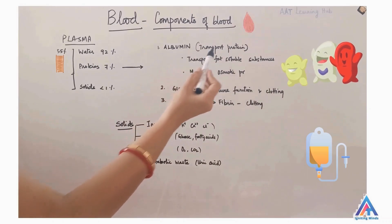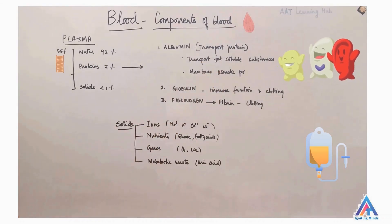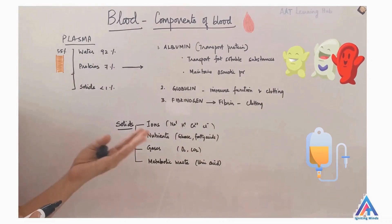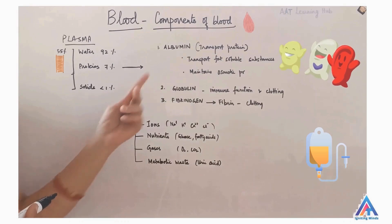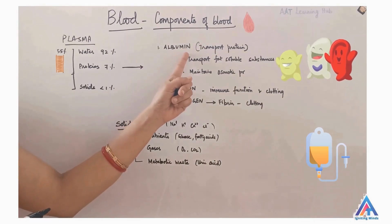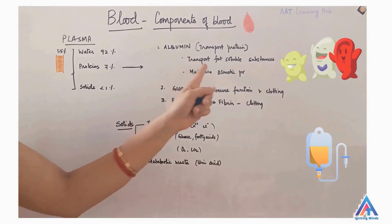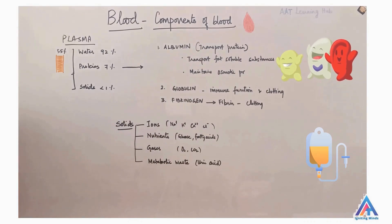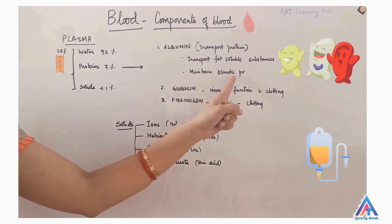One is albumin. It is the most abundant protein in plasma. I told you plasma of blood contains about 92% water, so how will fat soluble substances get transported? So this is where albumin comes into play. This is called transport protein because it helps transport lipid soluble substances like fats and certain hormones. Albumin also helps maintain osmotic pressure.